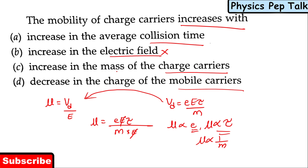And μ is inversely proportional to the mass of the charge carrier. So if the mass of the charge carrier increases, mobility does not increase. Decrease in charge of the mobile charge carrier — that is wrong. The correct answer is option A: increase in the average collision time. When τ increases, mobility increases.